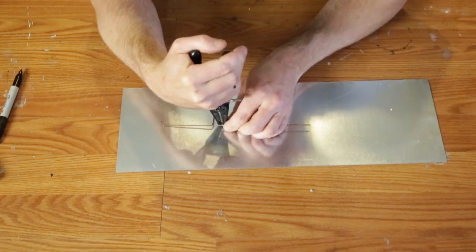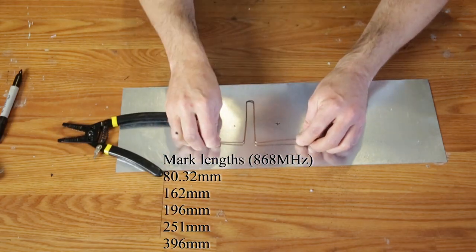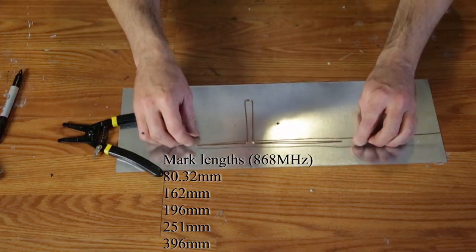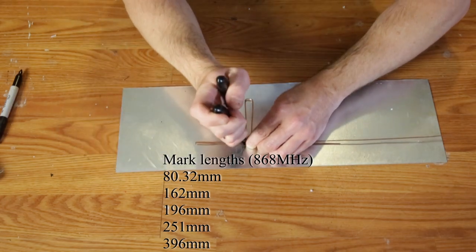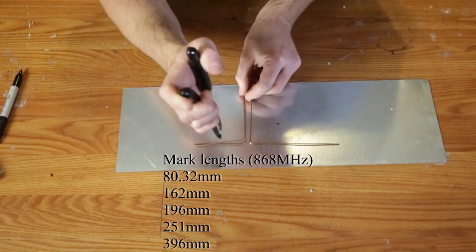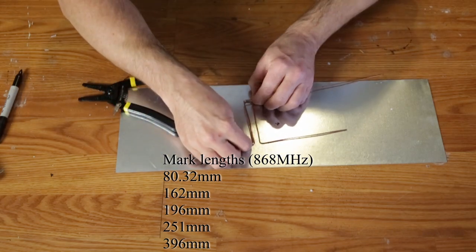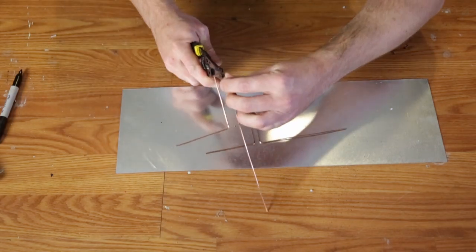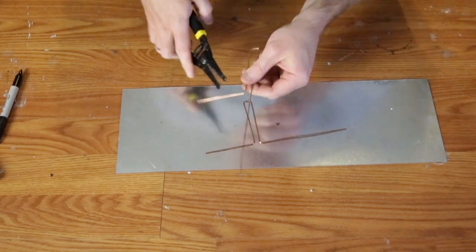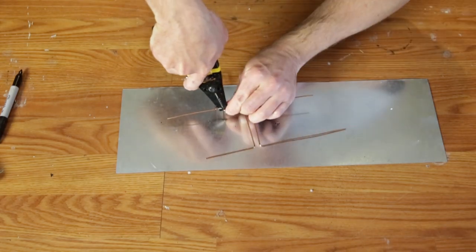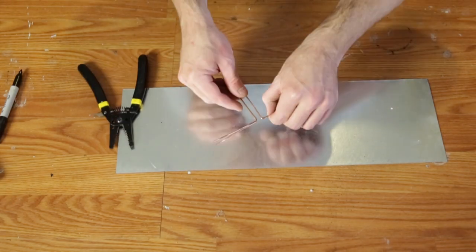Now mirror that with your other wire. Again, the dimensions are the same: 3 inches, 6 and 1/16, 6 and 5/16, 9 and 3/8, and 14 and 3/4 inches. Once they're about the same and trimmed to the same length, we'll move on to the next step.